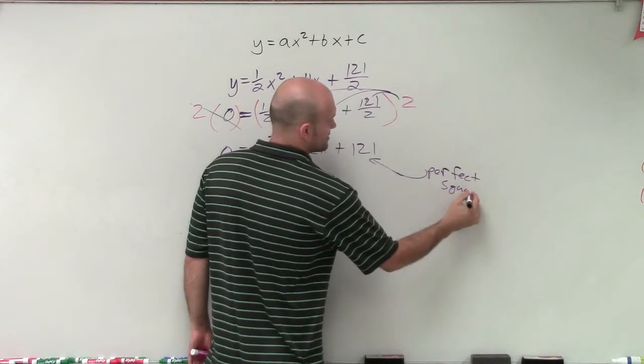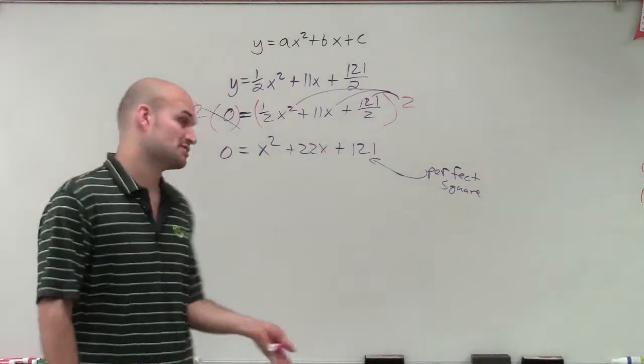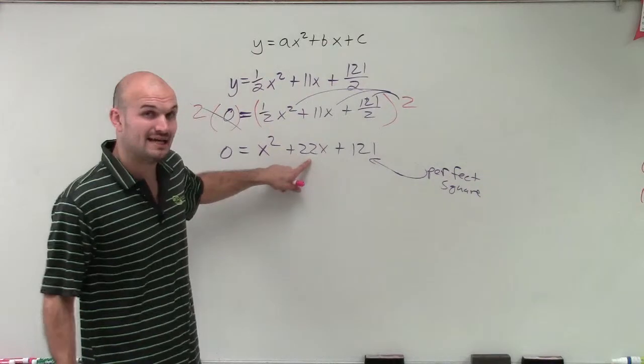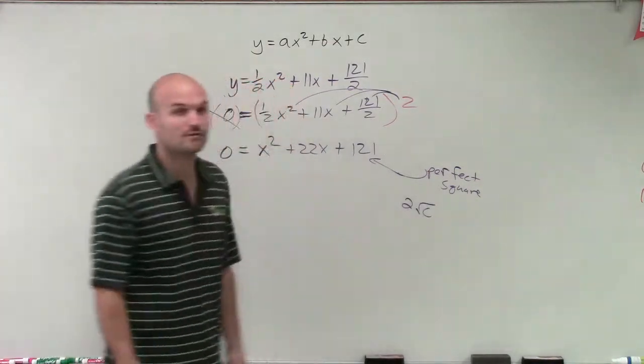And perfect squares, remember, when we have perfect squares, then we could possibly have a perfect square trinomial if my b is going to be 2 times the square root of my perfect square number.